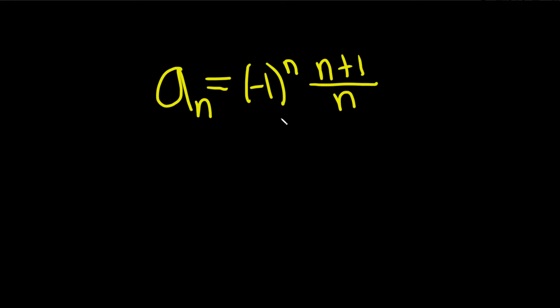Determine whether the sequence converges or diverges. So basically we have to take the limit as n approaches infinity of the sequence. Let me go ahead and write it. We have n plus 1 over n.